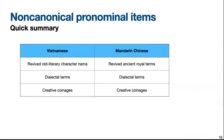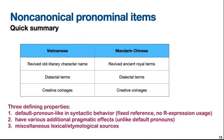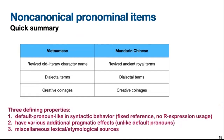In summary, we can see a striking similarity between Vietnamese and Chinese when it comes to non-canonical pronominal items. These three pronominal subtypes in both languages all come from revived old literary character names, dialectal terms, or created coinages on the internet. The defining properties of these terms are: default pronoun-like syntactic behavior, fixed reference, no R-expression usage, various additional pragmatic effects unlike default pronouns, and miscellaneous lexical or etymological sources. I will now hand over back to Julio to continue the discussion.